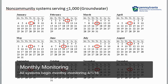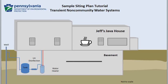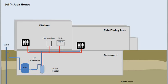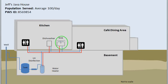In fact, all systems will be sampling monthly now. Let's get to creating a sample siting plan for the coffee shop, which is called Jeff's Java House. First, it's a good idea to gather a few things together. I have a plumbing diagram of the Java House. I also know the population served, the PWS ID number, and where the current coliform samples are collected.